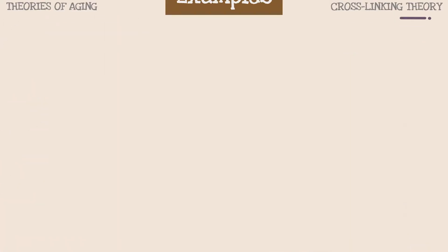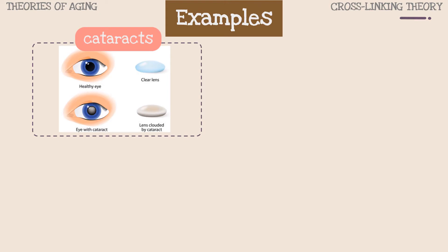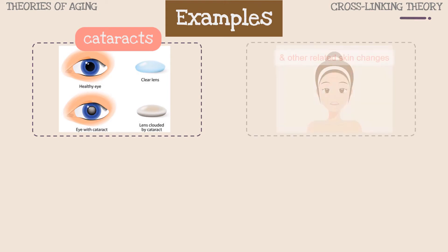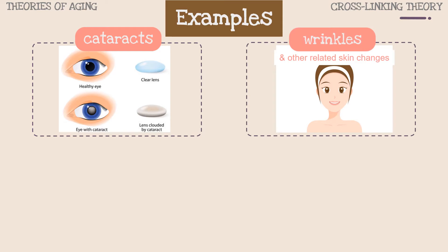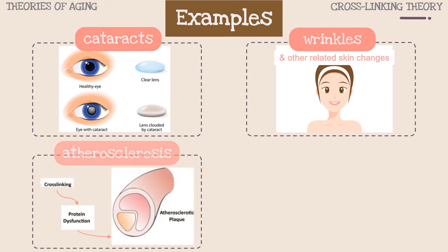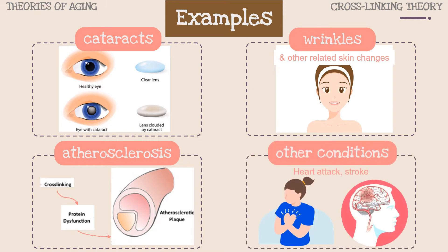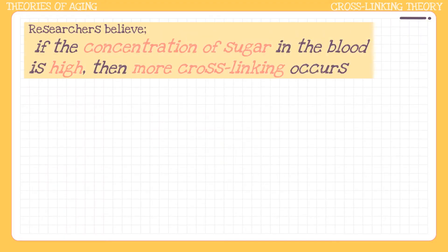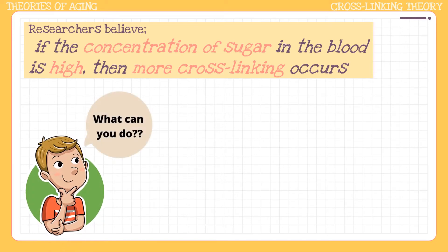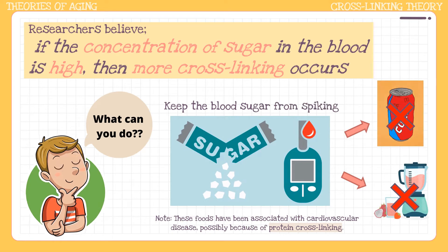Examples of when cross-linking theory applies include cataracts, which are the stiffening of the eye lenses; wrinkles and other age-related skin changes found to be caused by cross-linking of the skin protein collagen; atherosclerosis, which researchers believe involves cross-linking of proteins in the walls of the arteries; and hardening of the arteries that increases the risk for heart attack and stroke. While you can't stop cross-linking, you can slow it down by keeping your blood sugar from spiking. Avoid foods with a high glycemic index such as sugary sodas and juices, because they release sugar into the body quickly.